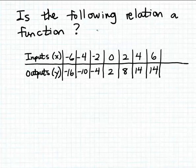Recall that what makes a relation a function is if each input in the relation is matched with one and only one output. You can also say a relation is a function if each input is matched with exactly one output.